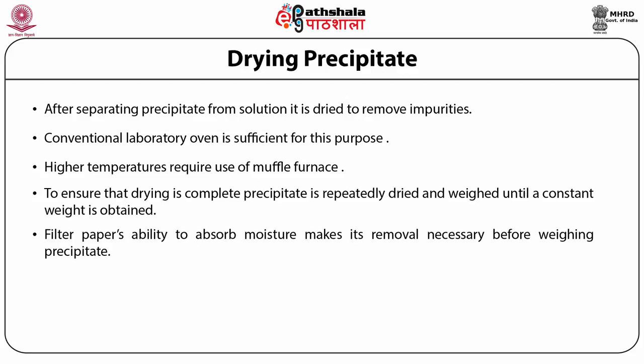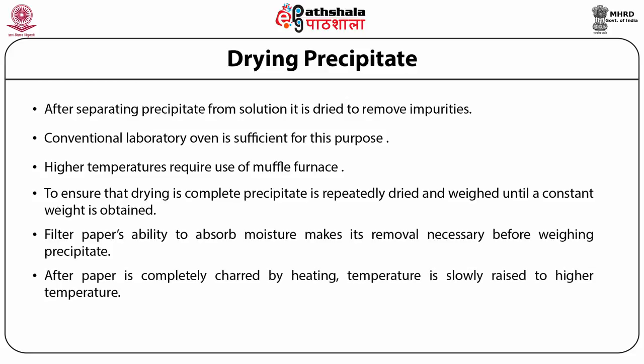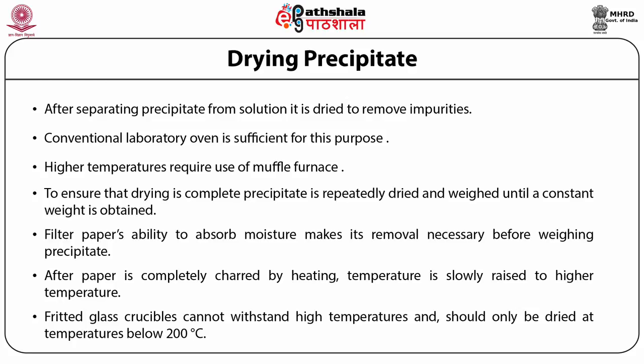Filter paper is removed by folding it over the precipitate and transferring both to a porcelain or platinum crucible. Gentle heating is used to first dry and then char the filter paper; once charring begins, temperature is slowly increased. The paper should not be allowed to catch fire, as precipitate retained by soot particles will be lost. After the paper is completely charred, temperature is raised further to oxidize any remaining carbon to carbon dioxide. Fritted glass crucibles should only be dried below 200 degrees centigrade, and the glass fibre mat in Gooch crucibles can be heated to a maximum of approximately 500 degrees centigrade.